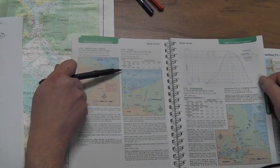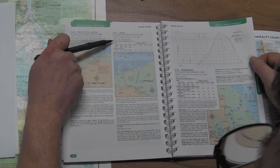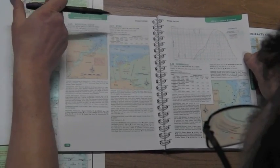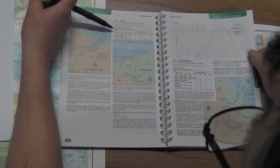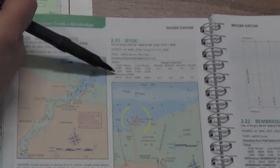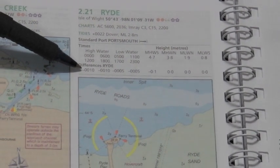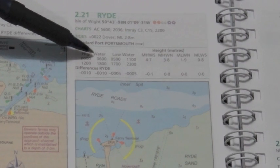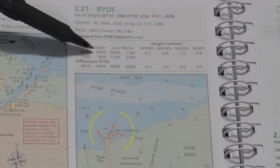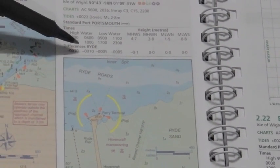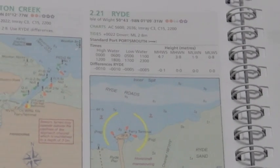It will give you a little bit of information which allows you to see the variation between this smaller harbour, Ryde, and the main port of Portsmouth. So if high water is near midnight or midday, it's going to be 10 minutes early — minus 10 minutes. If high water is near 6 o'clock in the morning or 6 o'clock at night, it's also going to be 10 minutes early. So high water is minus 10 minutes.